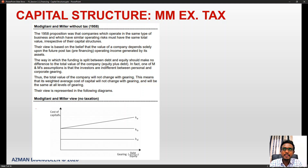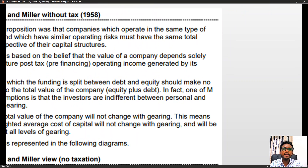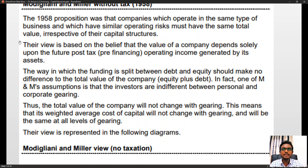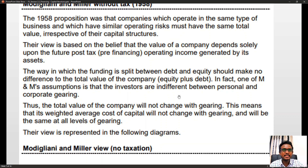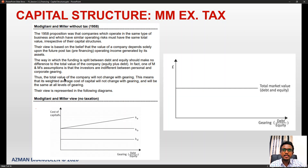Now let us look at Modigliani and Miller without tax. The 1958 proposition was that companies which operate in the same type of business with similar operating risks must have the same total value irrespective of their capital structures. Their view is based on the belief that the value of a company depends solely upon the future post-tax pre-financing operating income generated by its assets, and the way funding is split between debt and equity should make no difference to total value.